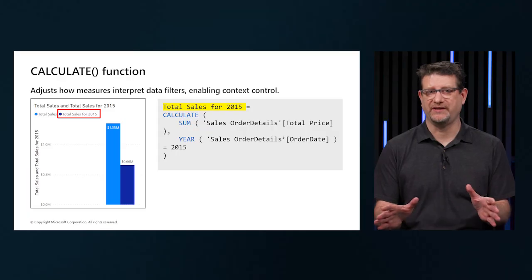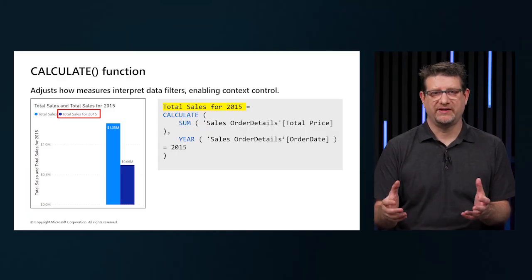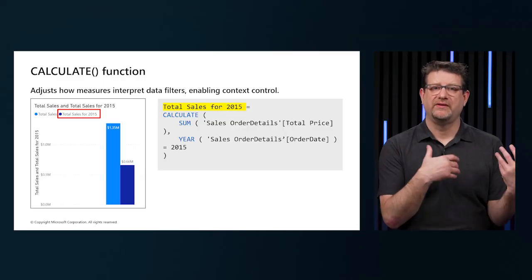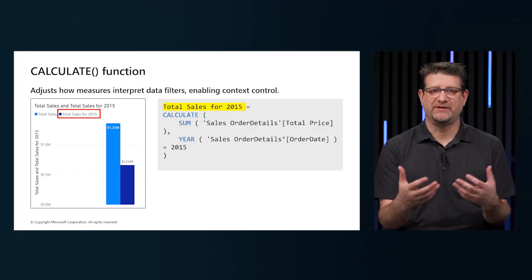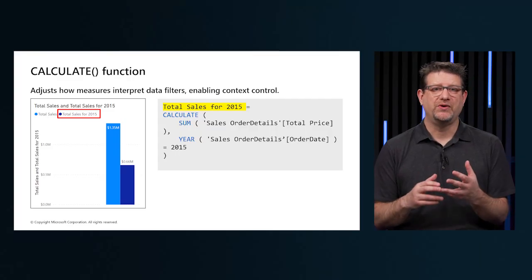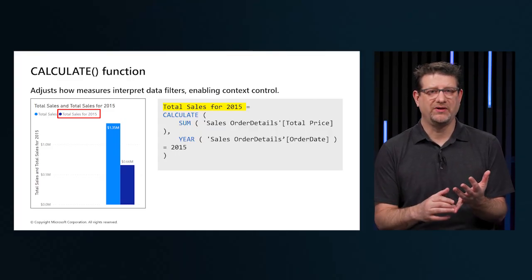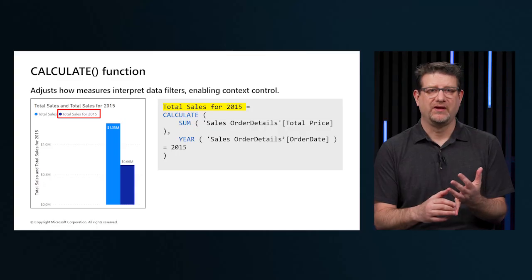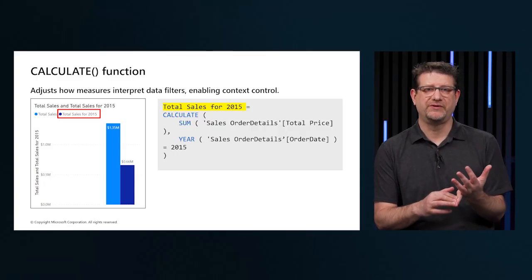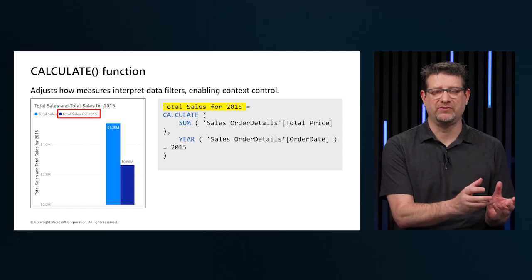Total sales for 2015: CALCULATE of the sum of sales order details total price, comma, the year we pass in — order details order date — and 2015. Notice how the measure is named 'total sales for 2015.' When we use CALCULATE to override the context, it's helpful to rename the measure in a way that describes exactly how we're overriding it.